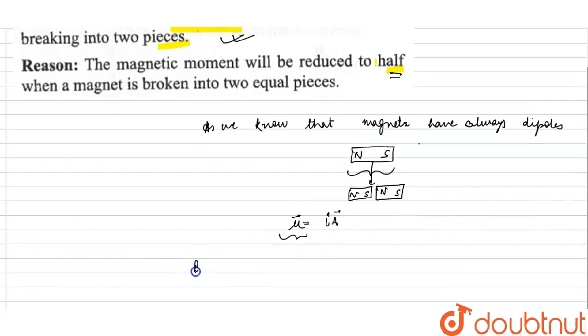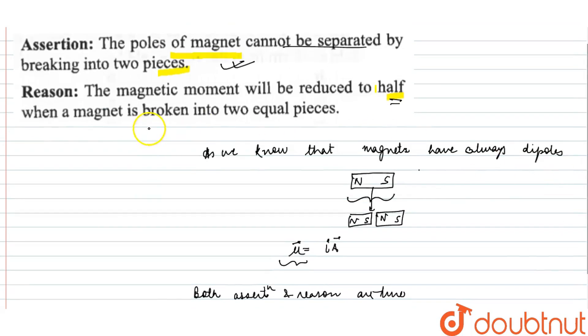But both assertion and reason are true. But reason statement does not give correct explanation for assertion. Because the correct assertion for explanation for this assertion is that magnets exist in dipoles. This is not the correct explanation.